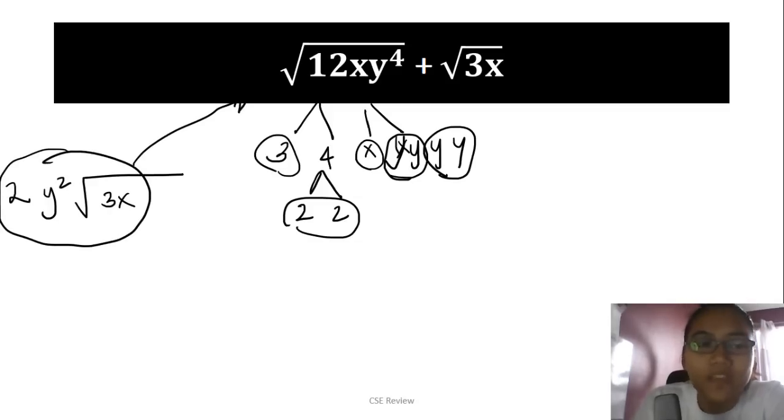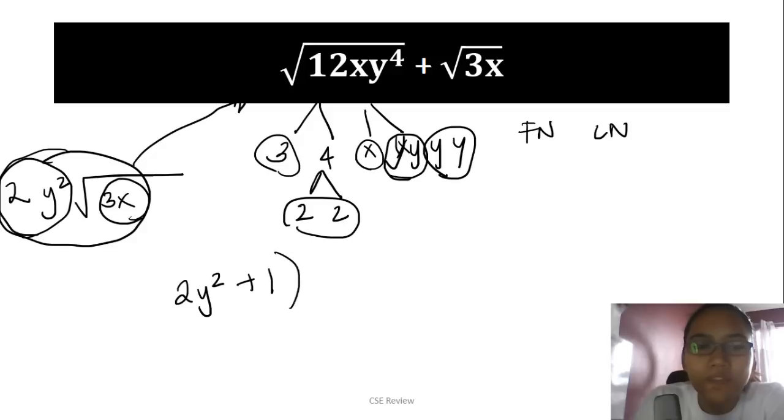When adding radicals, it's the same as adding polynomials—first name, last name. The first name here is 2y². Since they have the same last name, √(3x), you can add them. There's 1 of this √(3x), so plus 1. That gives you 3y²√(3x). That's your answer. If there were numbers, you'd actually add the 1.